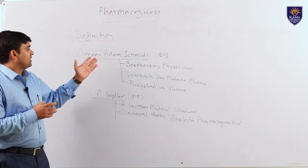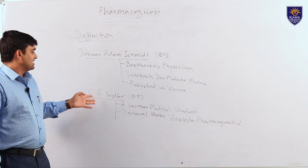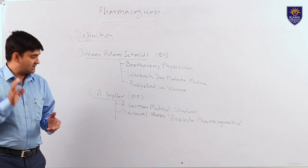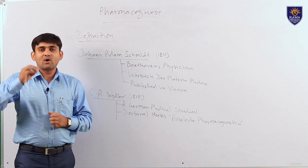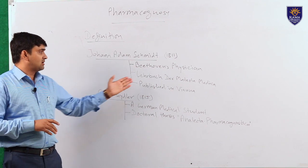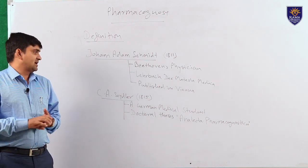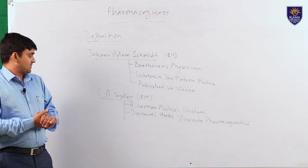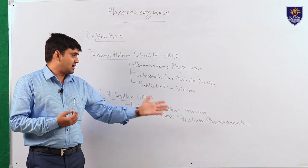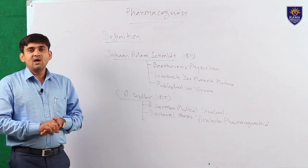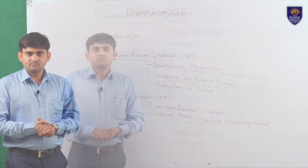The term pharmacognosy was coined by John Adam Schmidt in 1811. There is misinformation and confusion between John Adam Schmidt and C.A. Seydler. Some sources give the credit to C.A. Seydler, but John Adam Schmidt is the actual person who coined the term in 1811 in his book Lehrbuch der Materia Medica, which describes medicinal plants and their properties, published in Vienna. C.A. Seydler was a German medical student who wrote his doctoral thesis Analecta Pharmacognostica, published in 1815. So the actual credit goes to John Adam Schmidt.